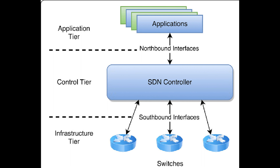Then we have the control layer. This is where the management and control planes exist. The controller is software that manages policies and flow of traffic throughout the network. It can be thought of as the brain behind SDN. It receives instructions or requirements from the SDN application layer and relays that to the physical components, or the infrastructure layer. The controller also extracts information about the network from the hardware devices and communicates that back to the application layer.